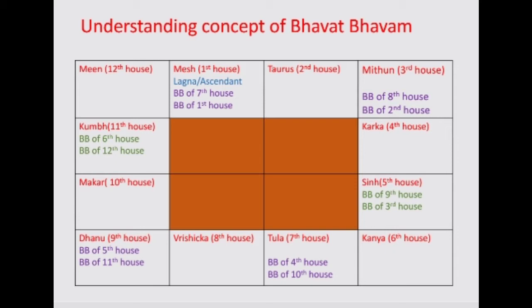But what exactly is this Bhavat Bhavam? Let us consider the 5th house as an example and calculate its Bhavat Bhavam. That means I have to count 5 from the 5th house, including the 5th house itself. So: 5, 6, 7, 8, 9. I reach the 9th house. So the Bhavat Bhavam of the 5th house is nothing but the 9th house.